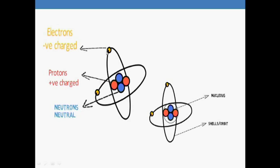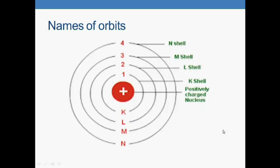Electrons are revolving around the nucleus in shells, which are also called orbits or energy levels.